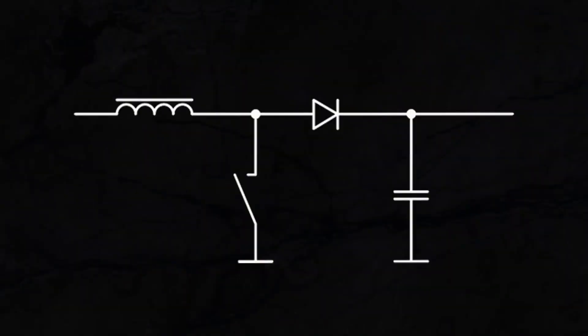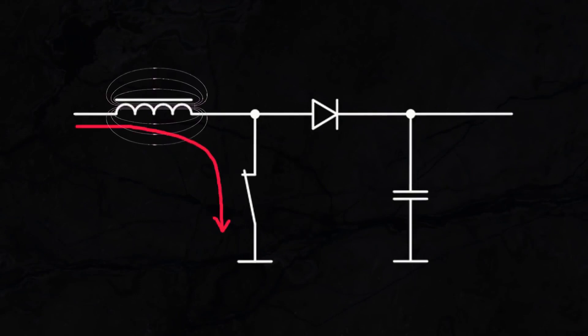Simplifying, it can be represented by the following scheme. We close the switch, and direct current begins to flow through the coil. At the same time, a magnetic field is created around the coil, which opposes the direct flow of current. This is the first phase of the converter.